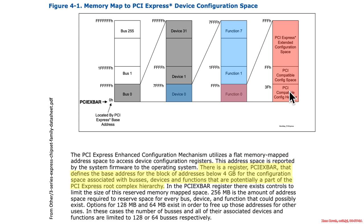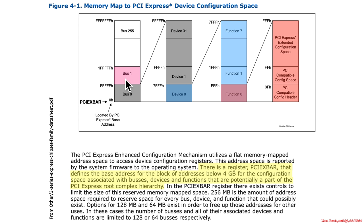That's basically how you should think of it — it's just a big array of four-kilobyte PCIe extended address spaces: bus zero device zero function zero, bus zero device zero function one, bus zero device zero function two, and so on, all the way up through multiple buses up to bus 255.